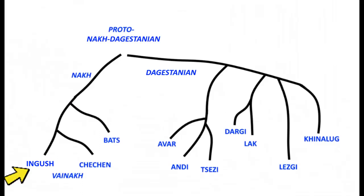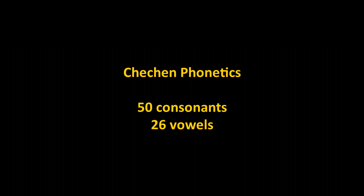The Dagestanian branch is a very large branch — I didn't put every language on the diagram. Avar is the second most widely spoken language in the family with about 700,000 speakers. Ingush has about 300,000 speakers. There are many more languages within each branch.